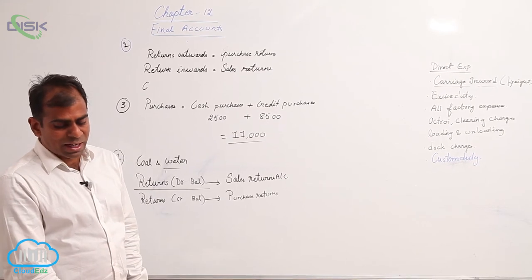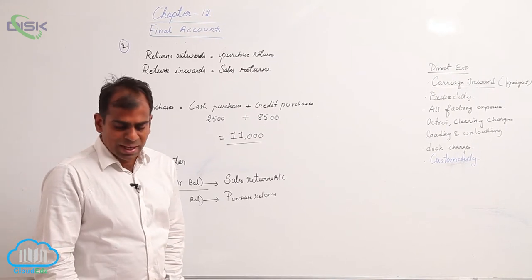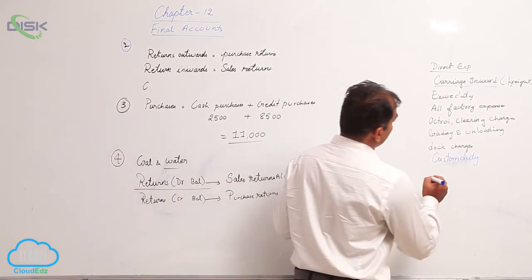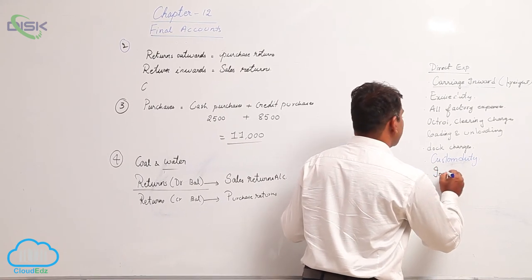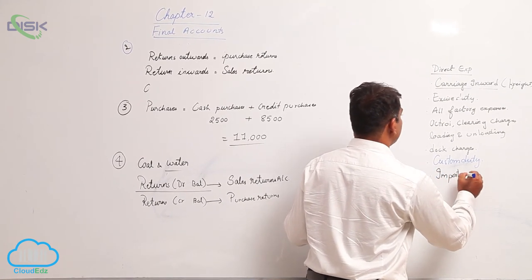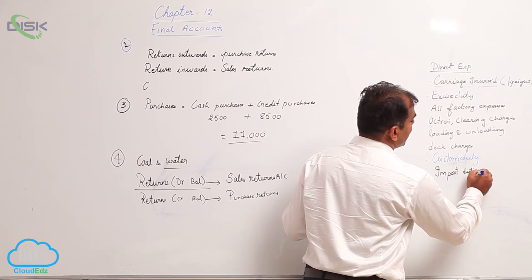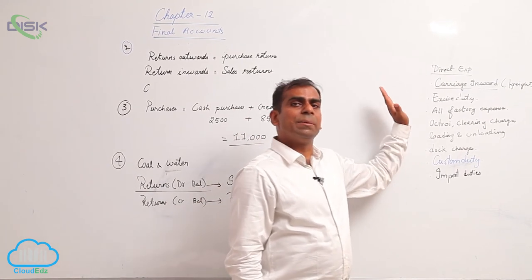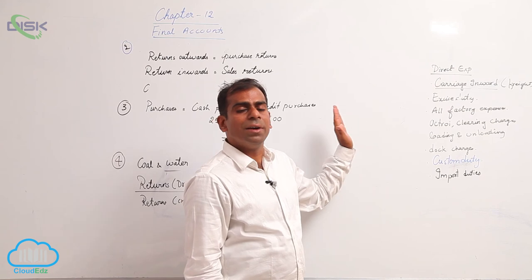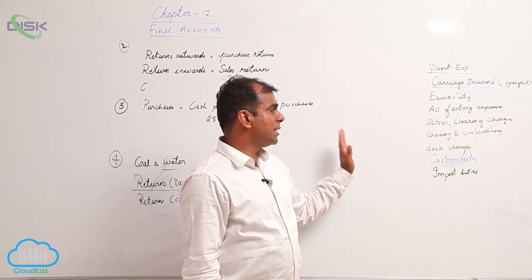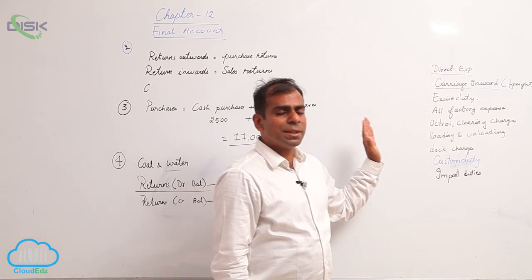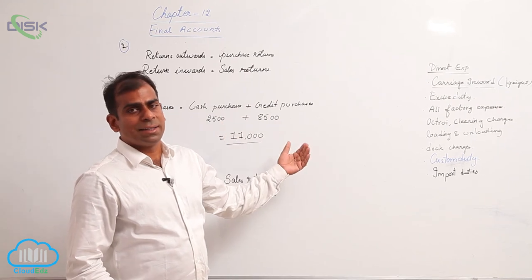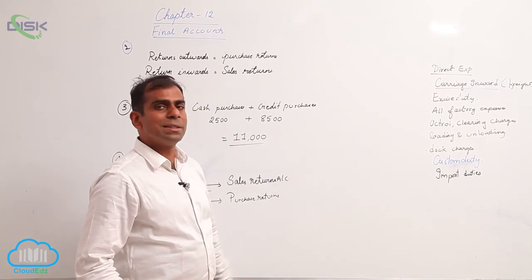Now next you are given import duties. These import duties would again go to your list of direct expenses. So make a brief summary of your direct expenses and remember these nominal accounts would be coming in your trading account. Any other nominal account would be coming in your P&L account. We will move on to P&L in the next class and see how it is prepared.